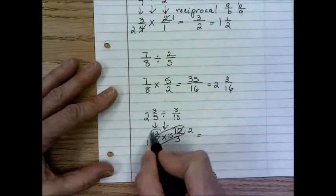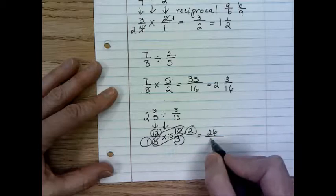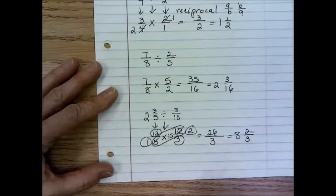So now thirteen times two is twenty-six. One times three is three. Twenty-six divided by three is eight with the remainder of two. So eight and two-thirds.